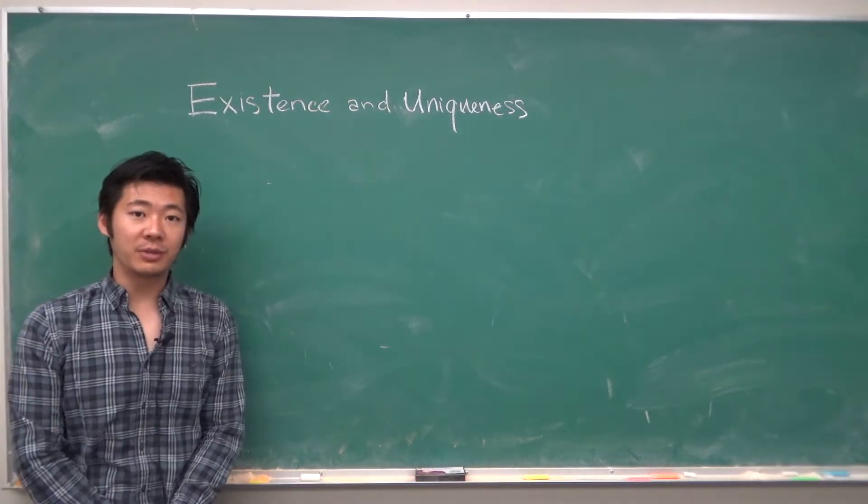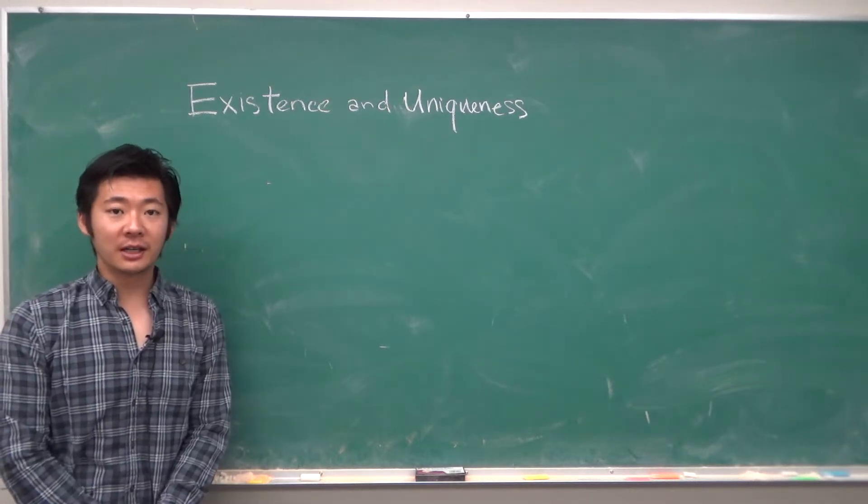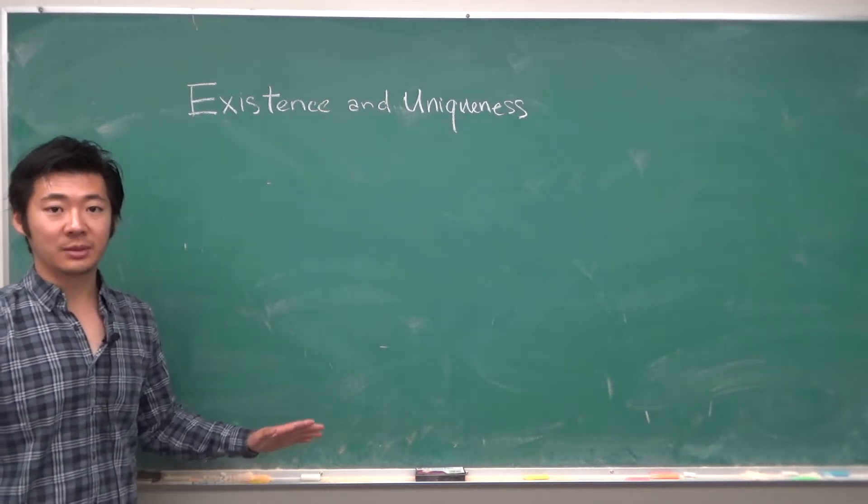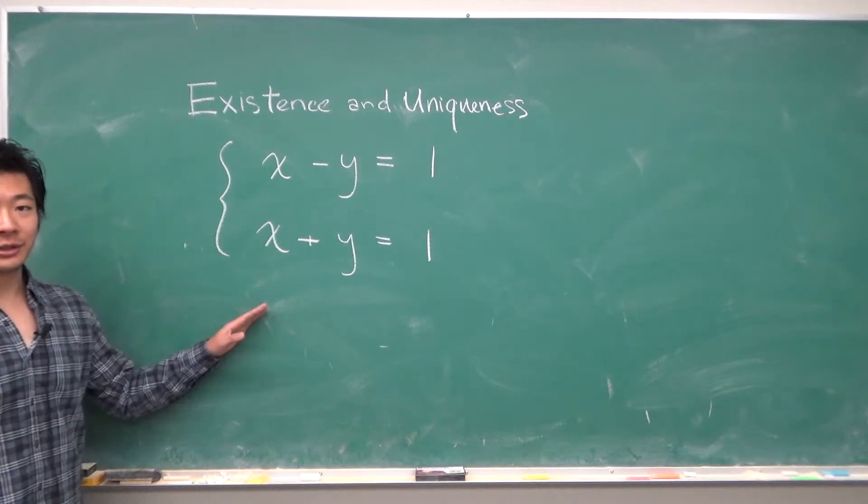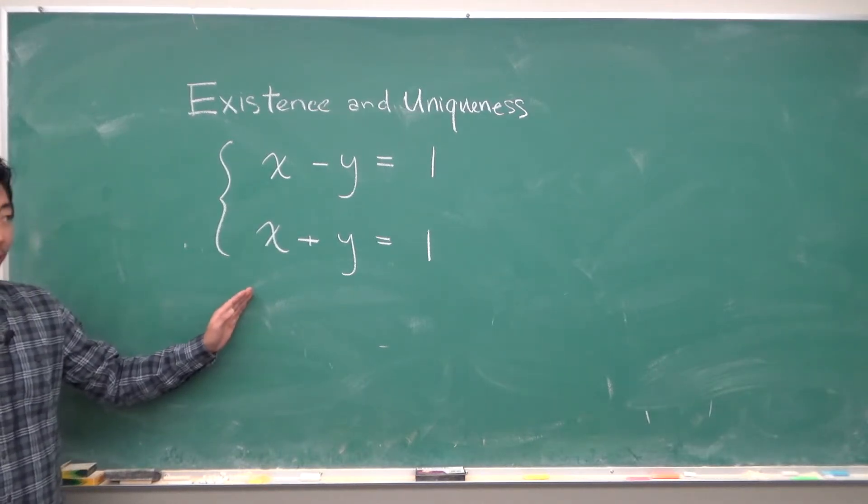To see why this is the case, we should probably look at the geometric situation that is happening with systems of linear equations. So here we have an example of two equations and two unknowns. So if we draw them on a graph, what will that look like?